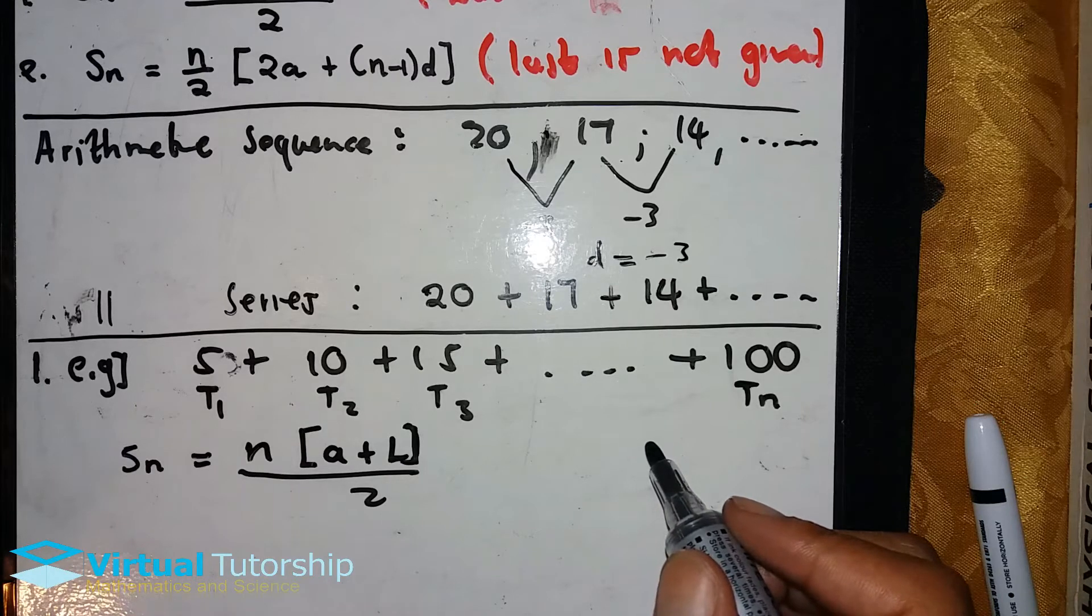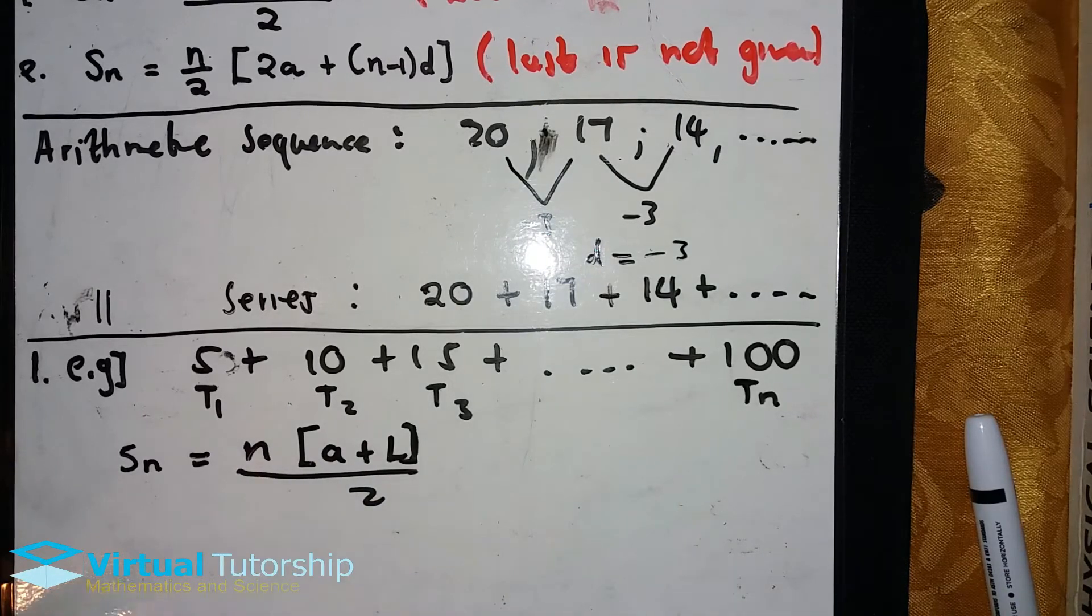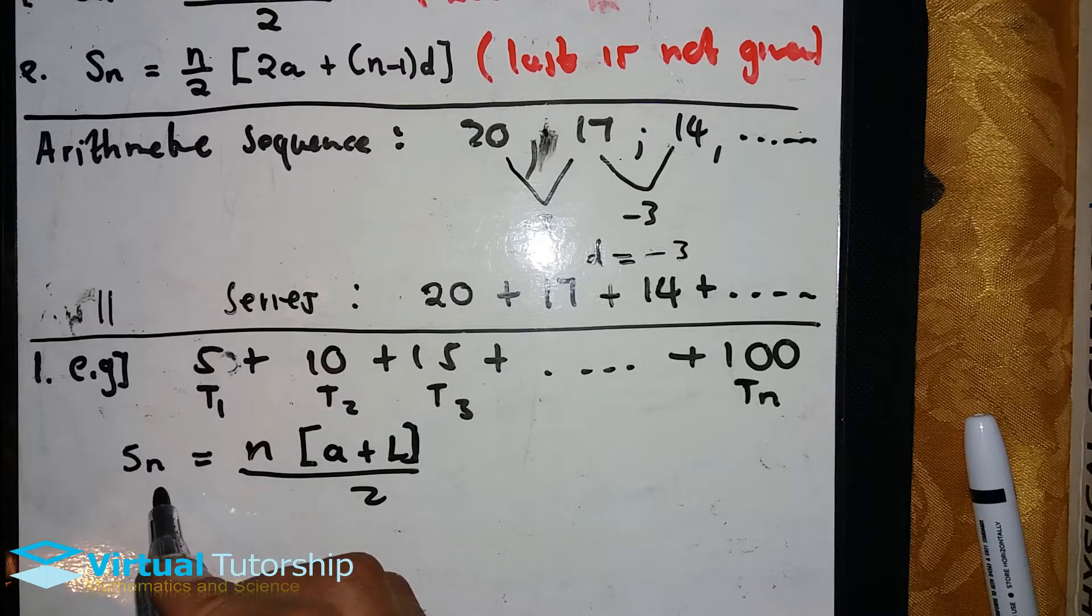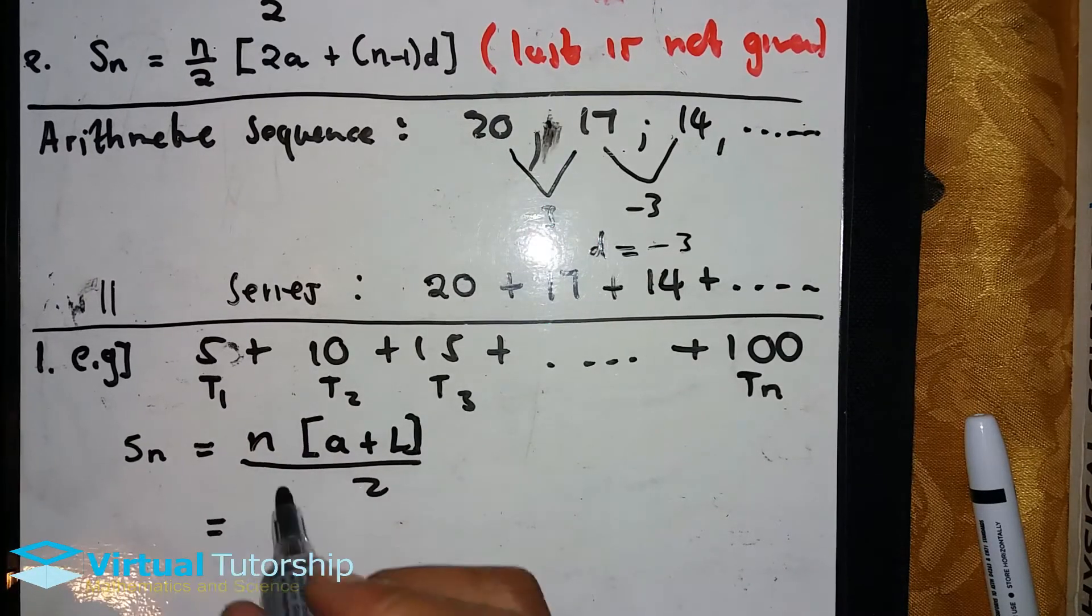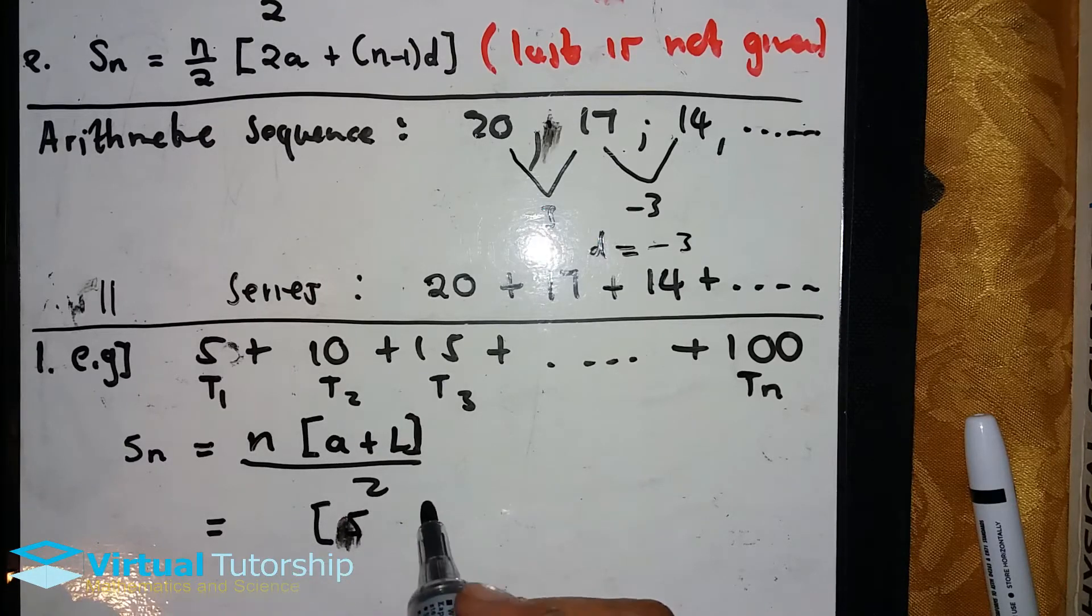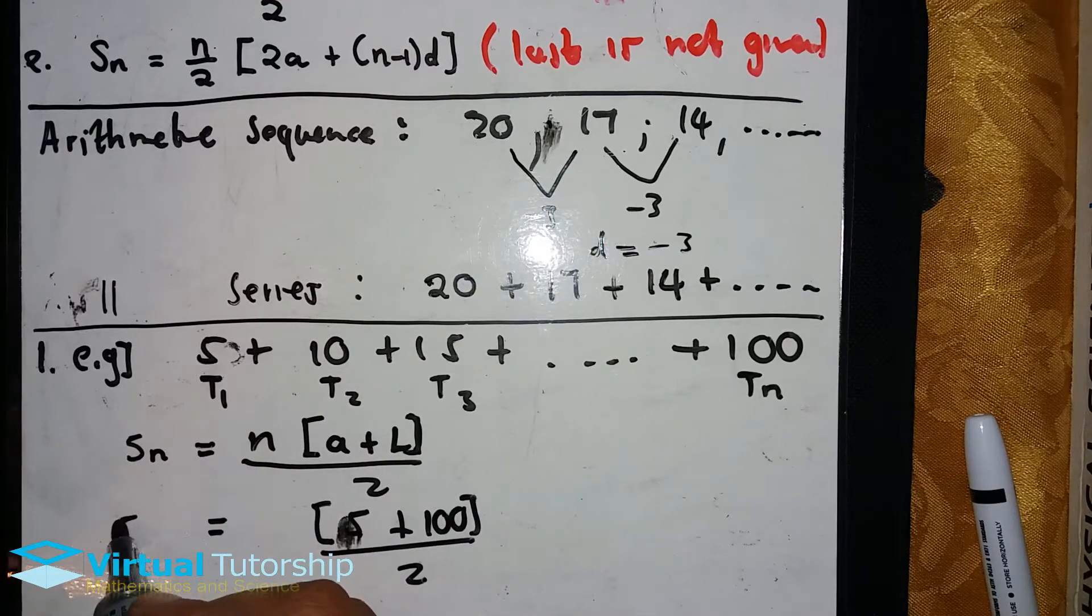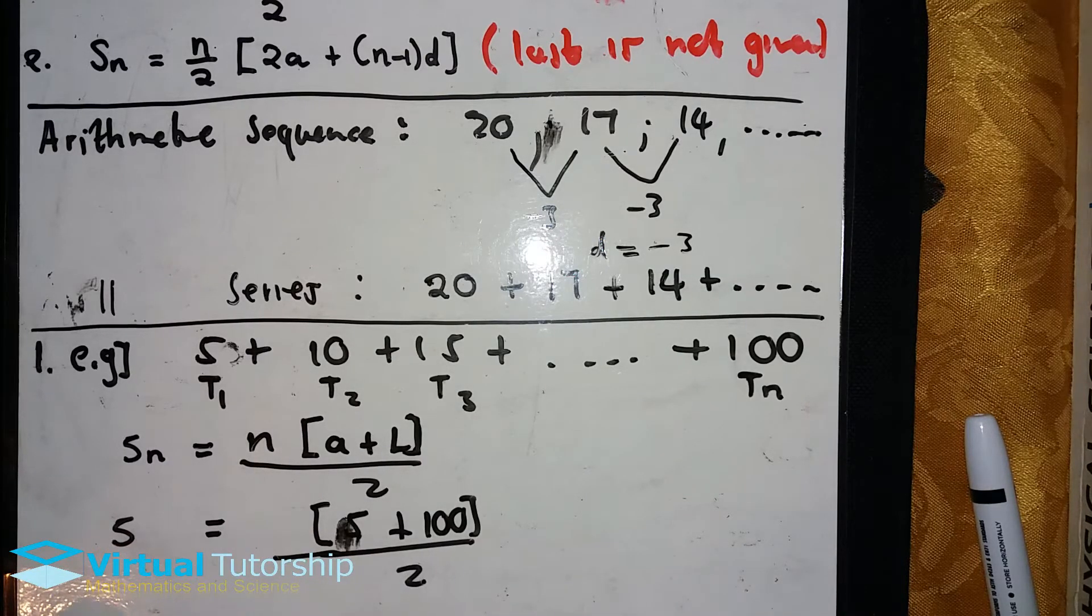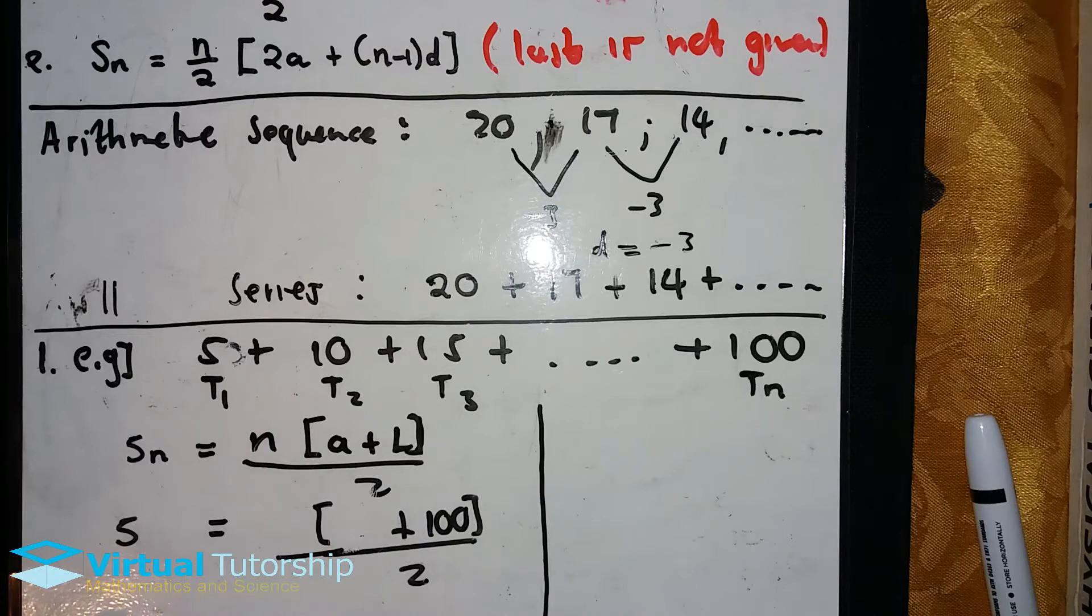The first formula we'll apply when we're given the last term. Just like in the arithmetic sequence, a stands for the first term T₁, n stands for the position of the term, and Sₙ stands for the sum of the n terms. The formula is Sₙ = n(a+L)/2.